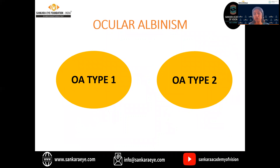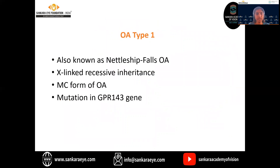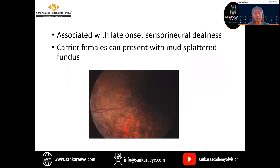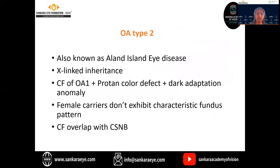Ocular albinism is divided into two types: type 1 and type 2. Type 1 is also known as the Nettleship-Falls ocular albinism. It is commonly found to have an X-linked recessive inheritance and is the most common form of ocular albinism. The mutation is found in the GPR143 gene. It is usually associated with late-onset sensorineural deafness. The carrier females can present with a mud-splattered fundus. Ocular albinism type 2, also known as the Aland Island Eye disease, has an X-linked inheritance. The clinical features of ocular albinism type 2 are the same as ocular albinism type 1, along with features of protan color defect and dark adaptation anomalies.